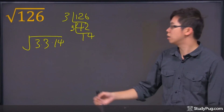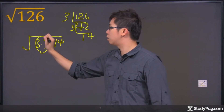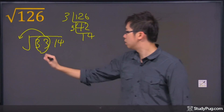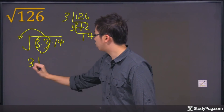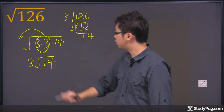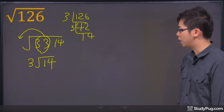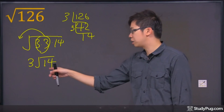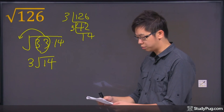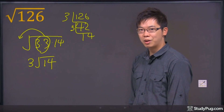Remember, you're doing square root. So for any pair that's identical, you can bring it out of the radical. So you get yourself a 3 and root 14, and that is your final answer. Because there's nothing else we can do about the 14, we leave it just like that. Thanks for watching.